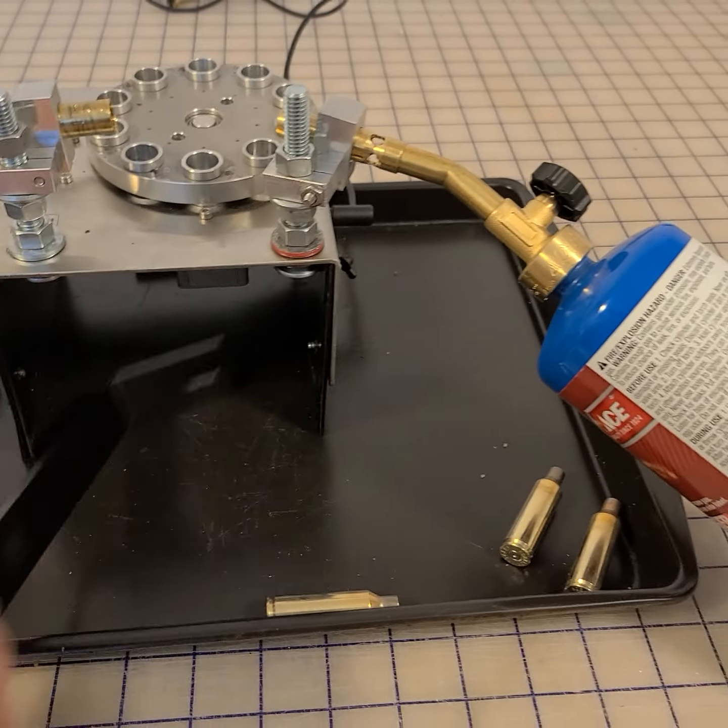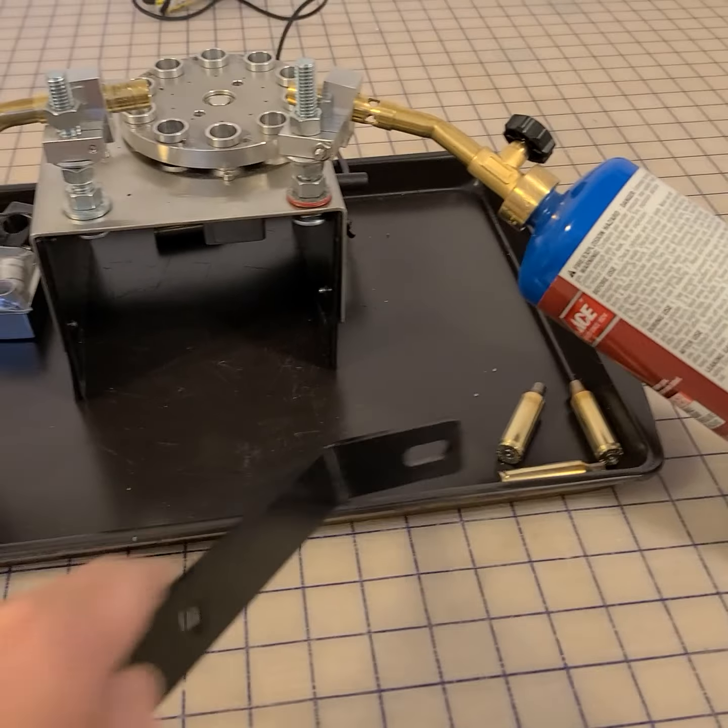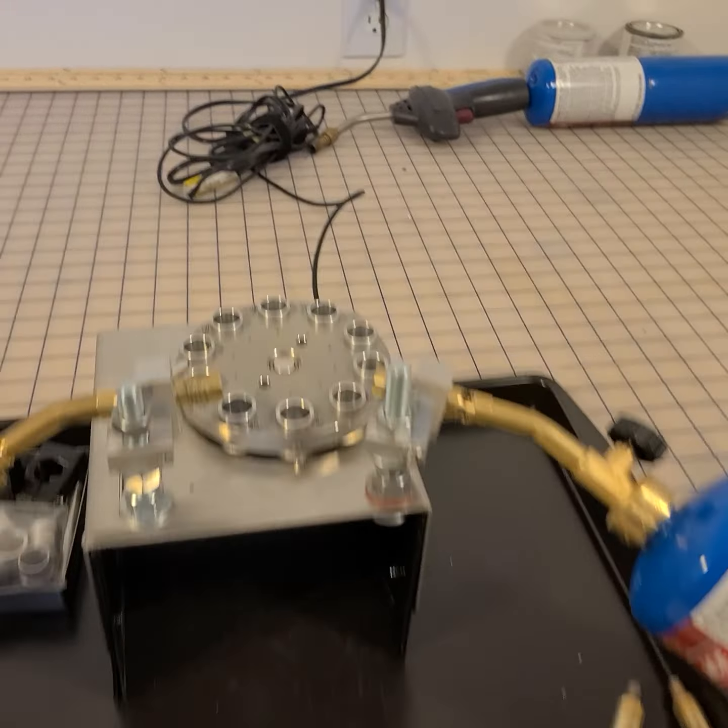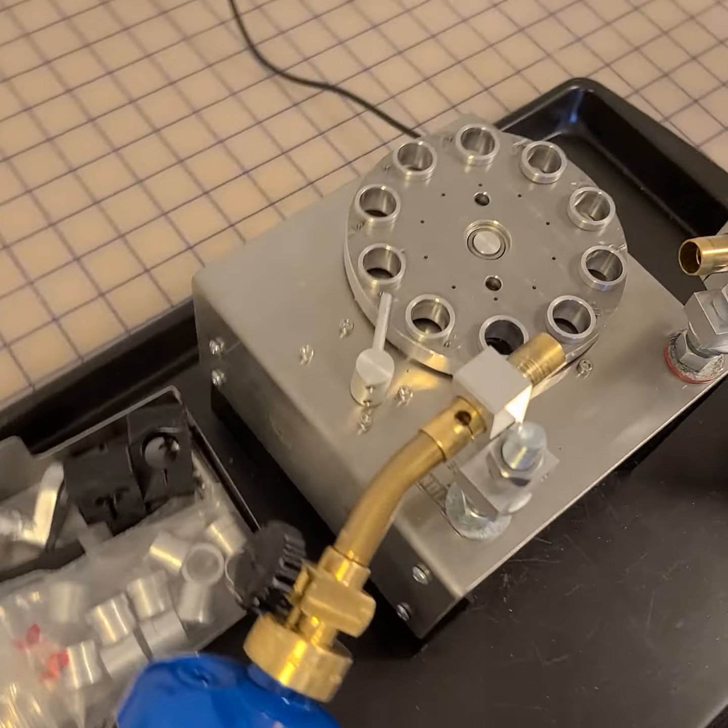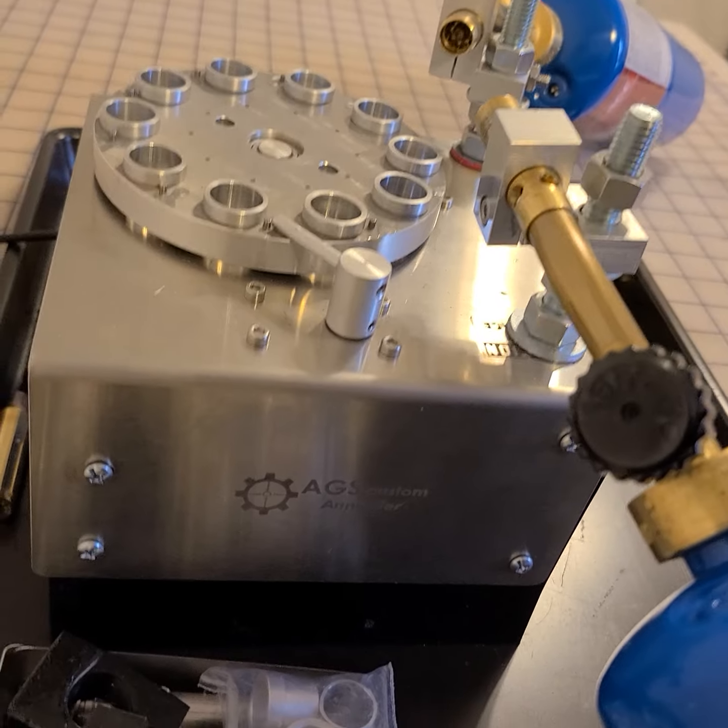But this tray doesn't hold nowhere near the volume that I do on a weekly session so I just went to a cookie sheet. I can scoop them out with this and I kick them over and then they'll dry over there and I can just keep going but again the AGS custom annealer.